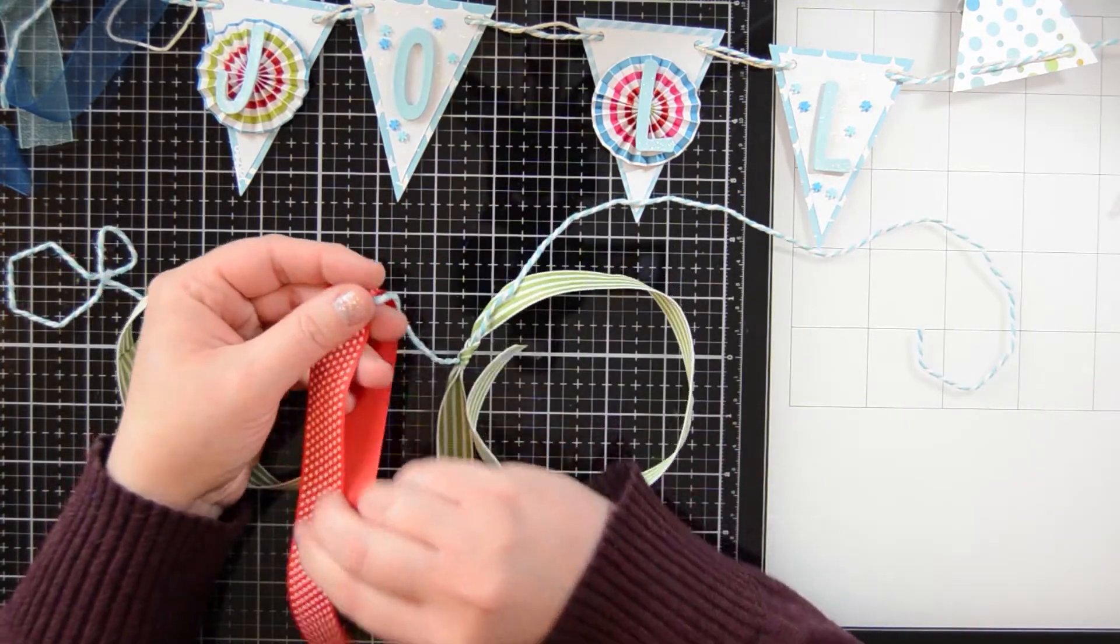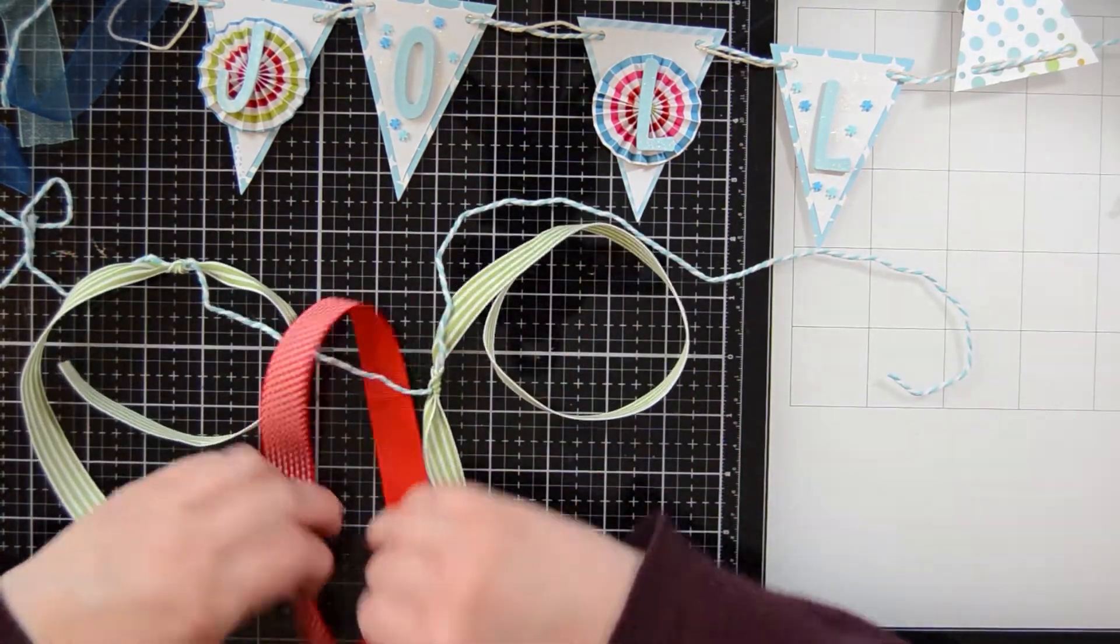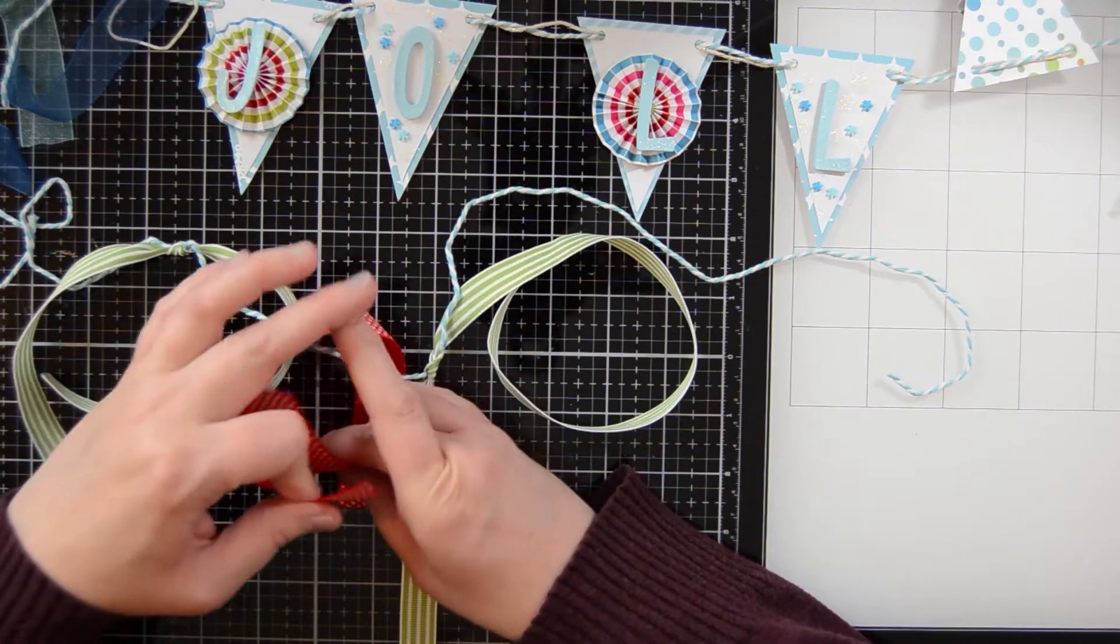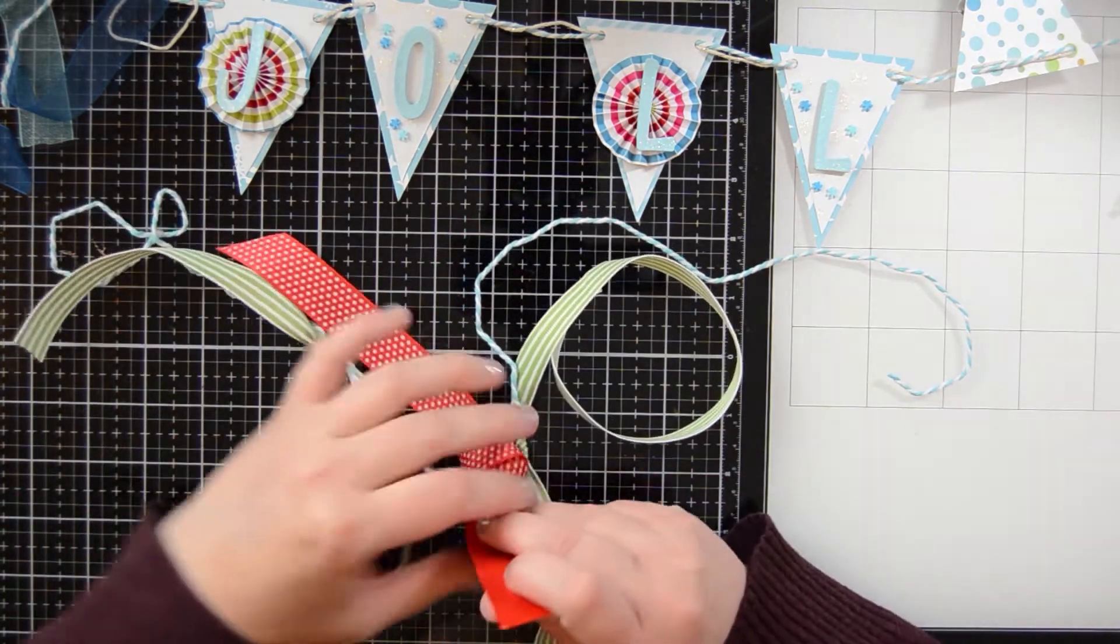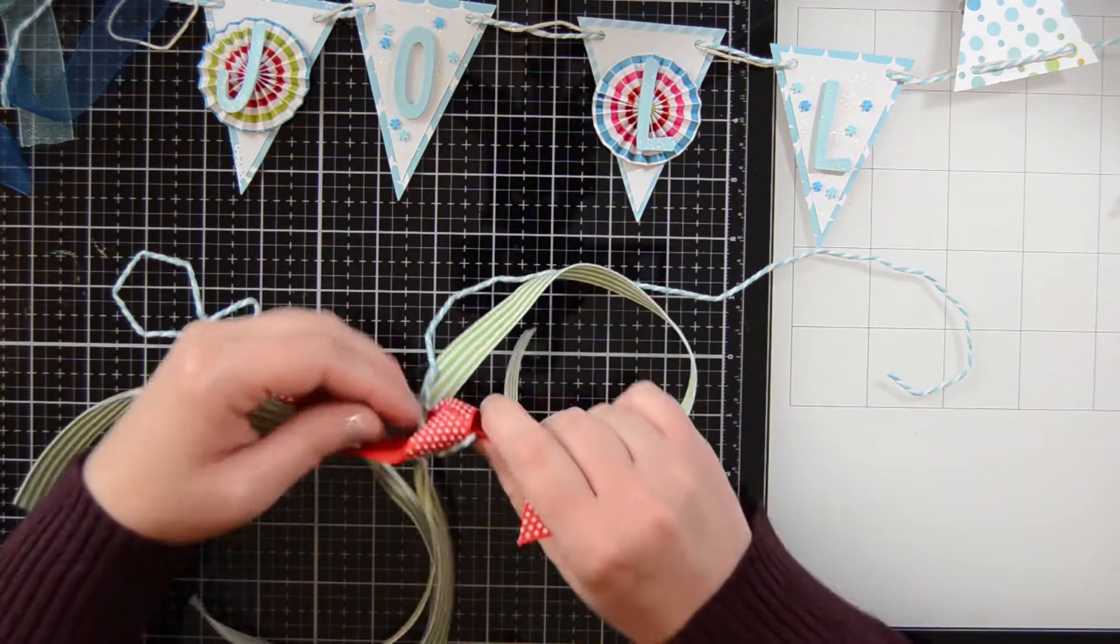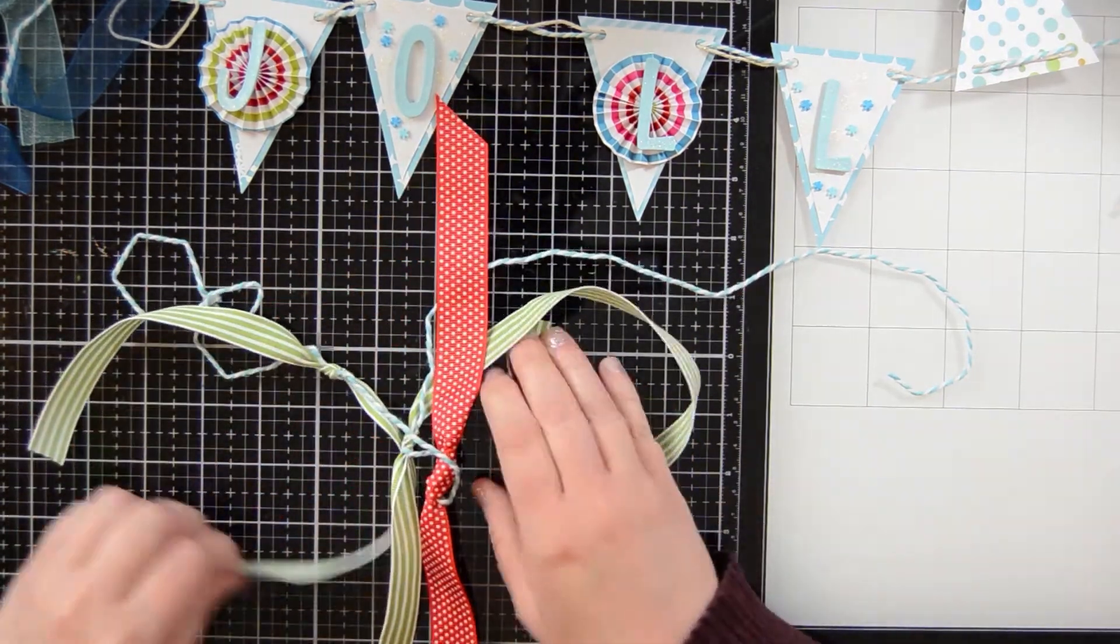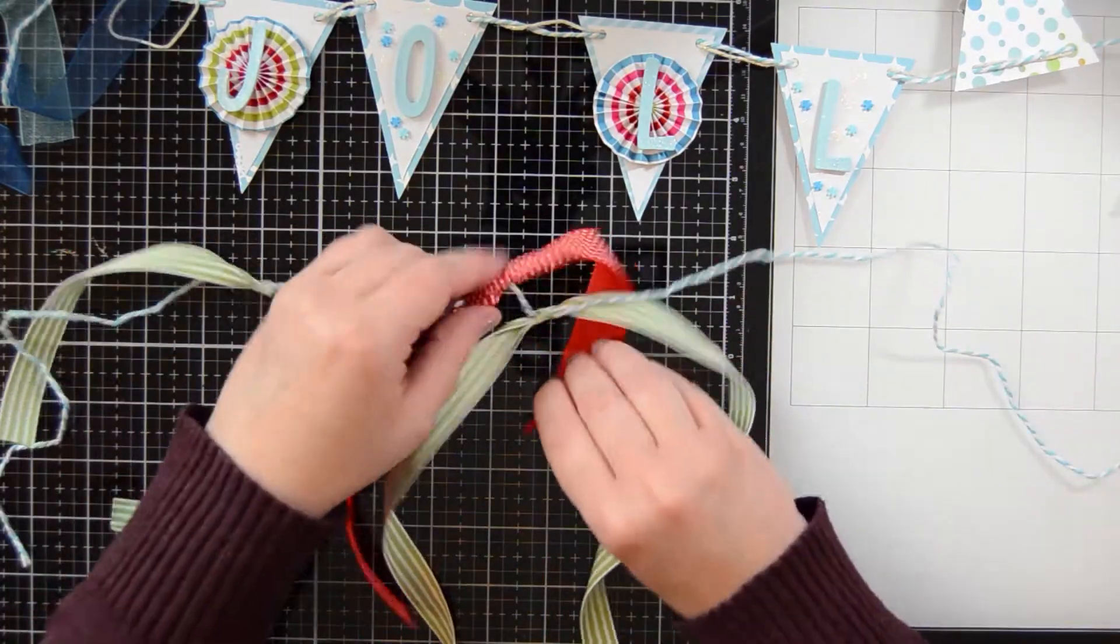So I'm going to continue to tie ribbon along this string. I end up with quite a bit, but you can kind of decide if you don't want as many, maybe you don't want to hang as many cards. Each ribbon will hang two cards to kind of get an idea of how this will be.